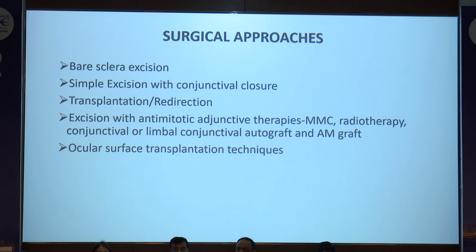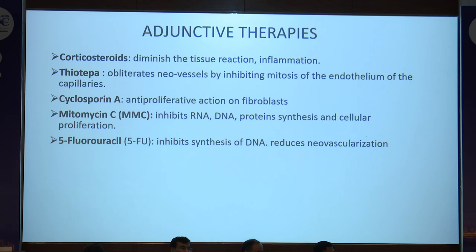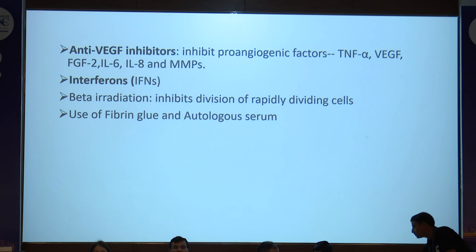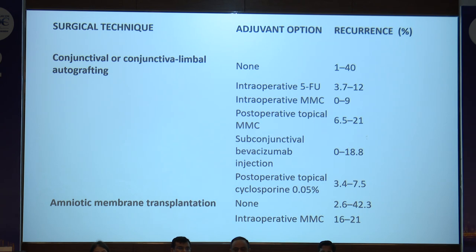Surgical approaches include bare scleral excision followed by conjunctival closure, transplantation, anti-mitotic adjunctive therapies such as mitomycin C and radiotherapy, and ocular surface transplantation techniques. The bare scleral technique has become largely redundant due to high recurrence rates of 4 to 89%. With post-operative topical cyclosporin, recurrence rates came down to 12 to 22%. Conjunctival or conjunctival limbal autografting gives recurrence rates of 1 to 40%; however, with post-operative topical cyclosporin, this reduces to 3.4 to 7.5%. Amniotic membrane transplantation still shows recurrence of 2.6 to 42.3%. Adjunctive therapies include corticosteroids, thiotepa, cyclosporin, mitomycin C, 5-fluorouracil, anti-VEGF, interferons, fibrin glue, and autologous serum for graft attachment.